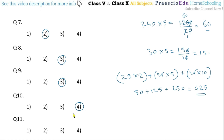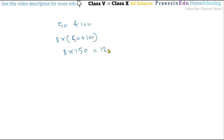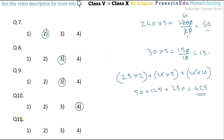Question number eleven: Dhanesh went to the bank with eight notes each of rupees 50 and rupees 100, and asked for rupees 10 notes in return. Total amount: 8 multiplied by 150 equals 1,200 rupees. Dividing by 10 equals 120. He will receive 120 notes of rupees 10. This is given in option number three.